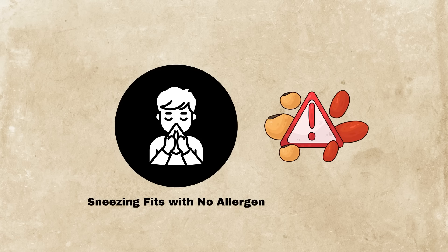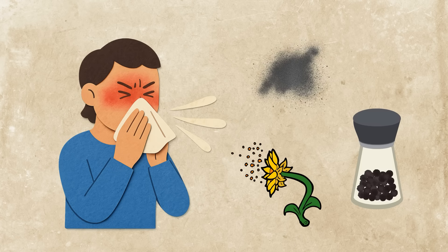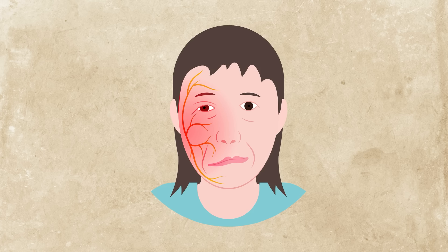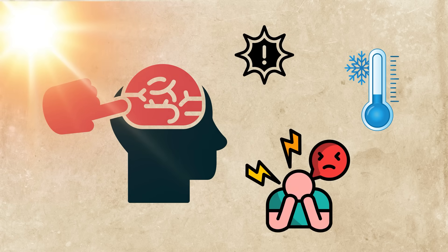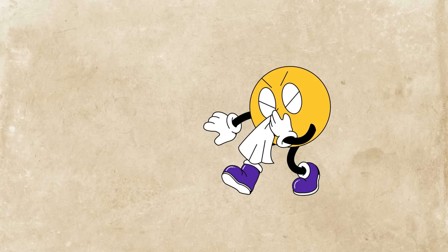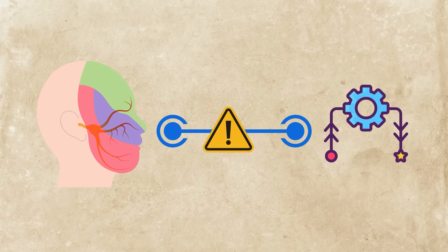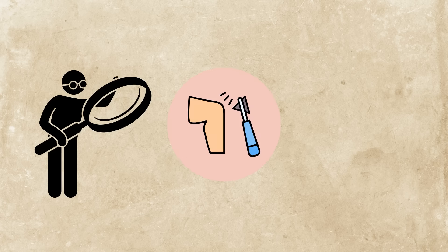Sneezing fits with no allergen. Ever had a sneezing attack where there's no dust, pollen, or pepper in sight? This might be your trigeminal nerve acting up. This nerve controls sensation in your face and can be triggered by sudden changes like cold air, bright light, or even emotional stress. Basically, your sneeze reflex is going off for no real reason. It's a miscommunication between sensory input and motor output, a sneeze without a cause and one of the clearest examples of a reflex firing off like a broken circuit.